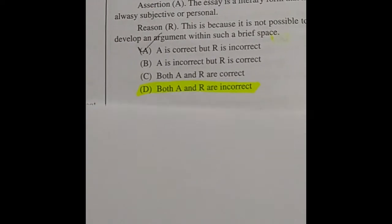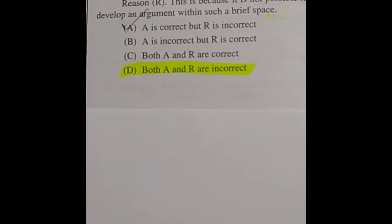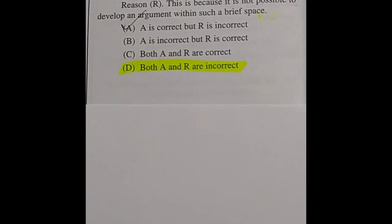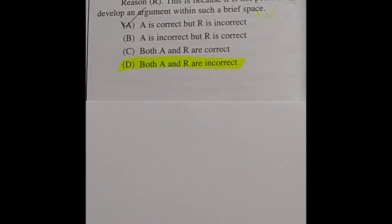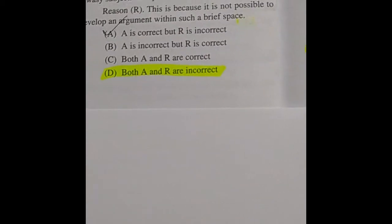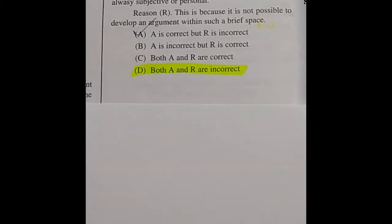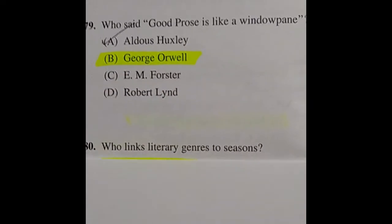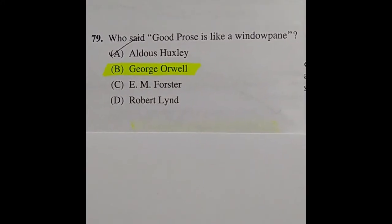Question 78: Given below are two statements — Assertion: 'The essay is a literary form that is always subjective or personal.' Reason: 'This is because it is possible to develop an argument within such a brief space.' The right answer is option D: both A and R are correct.